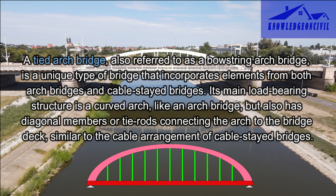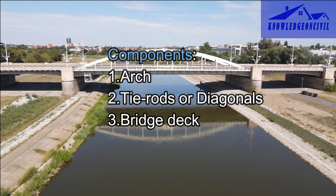A tied arch bridge, also referred to as a bowstring arch bridge, incorporates elements from both arch bridges and cable-stayed bridges. Its main load-bearing structure is a curved arch, but it also has diagonal members or tie rods connecting the arch to the bridge deck. The arch can take various shapes including semi-circular, parabolic, or elliptical, and provides the primary support. Tie rods or diagonal members connect the arch to the bridge deck to help support and stabilize the arch structure. The bridge deck carries vehicles, pedestrians, or other loads and is supported by the arch and the tie rods.